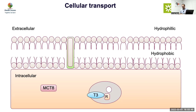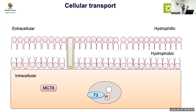The MCT8 transporter defect causes the most severe form of hypothyroidism-like picture - with huge mental retardation, worse than even cretinism. To treat this, you can give very high doses of thyroxine, or develop an analog that can cross the membrane without needing MCT8. TRIAC compounds have been developed which can pass through the membrane and act on the receptor - this is a very interesting condition.